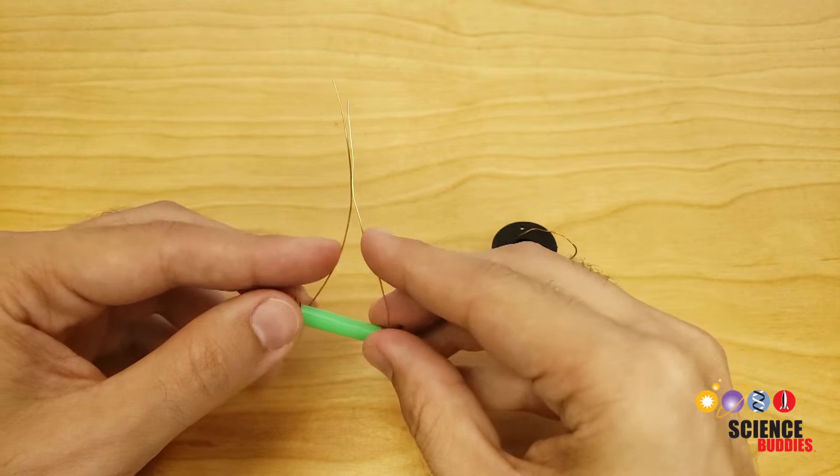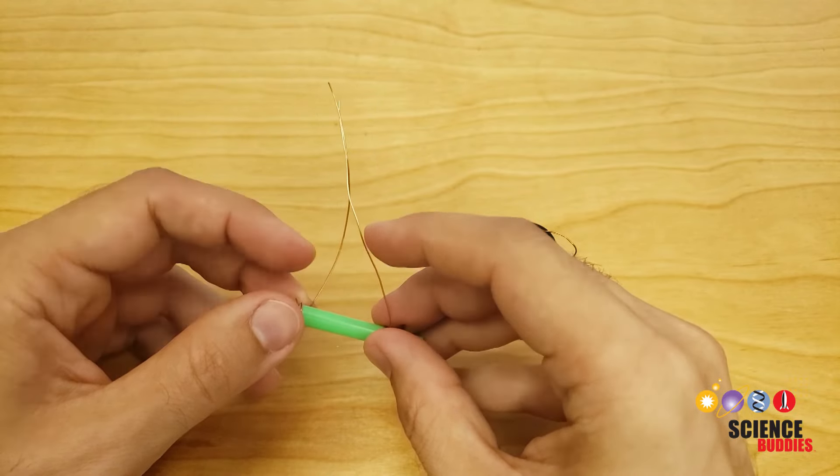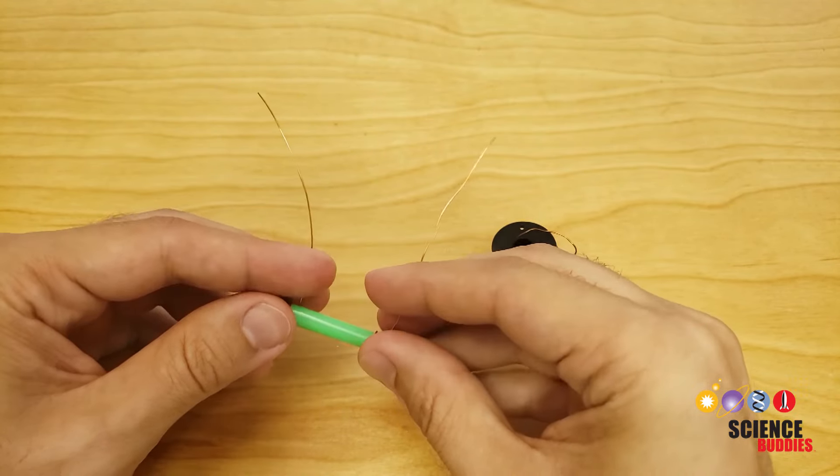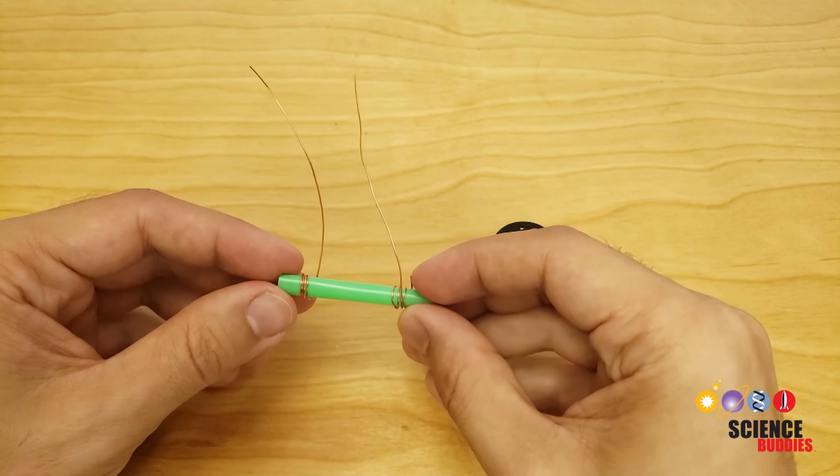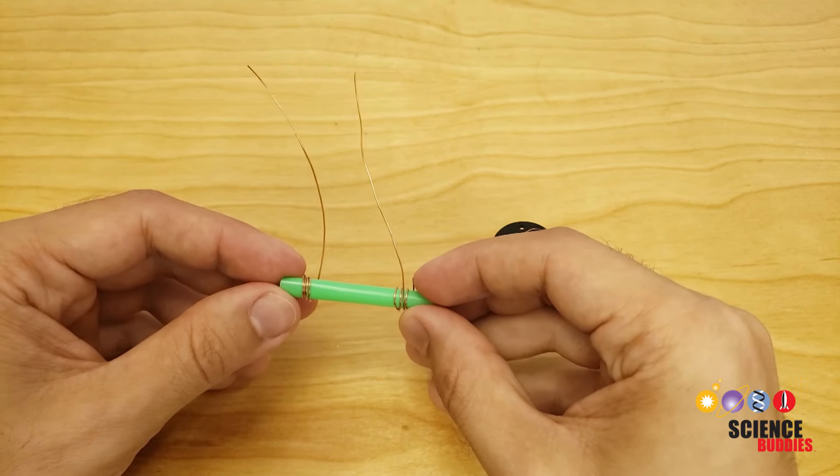It is important to make sure these loose pieces of wire do not touch each other when you are doing the experiment, or that will create a short circuit and blow the fuse in your multimeter. We'll talk more about that later.